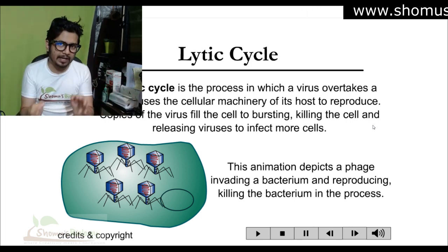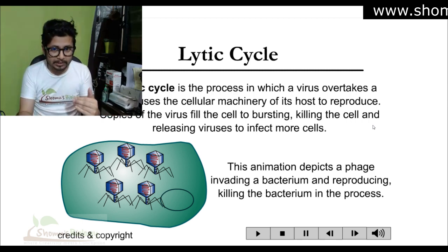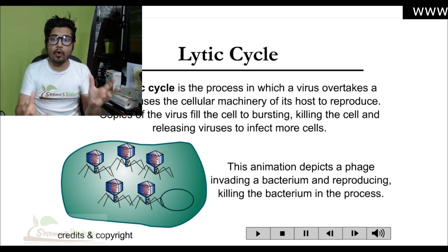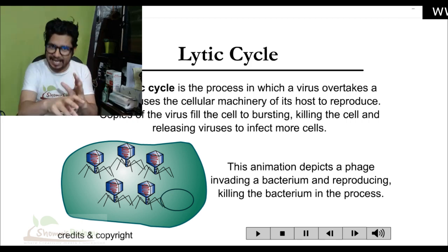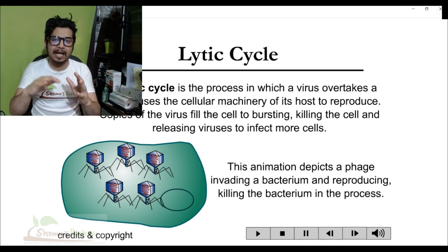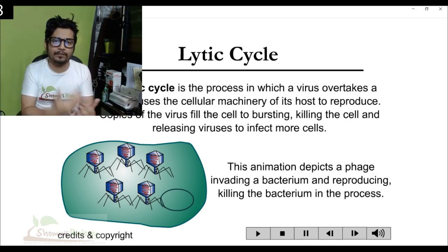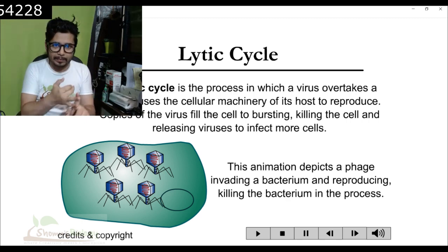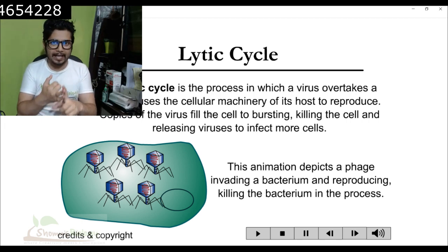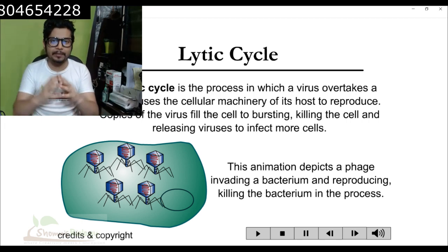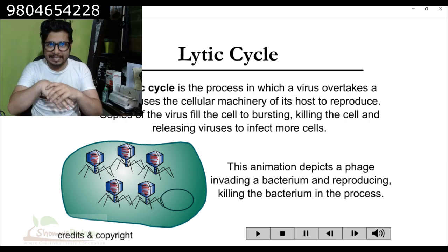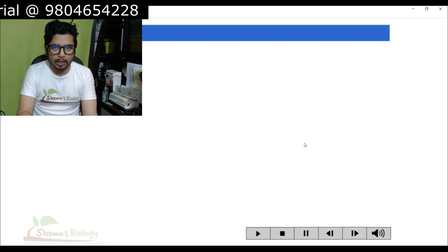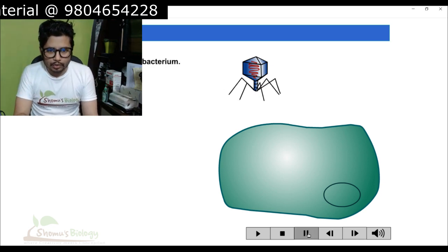Now here is the animated version of the whole process in sequential detail. In the lytic cycle, a virus overtakes a cell, hijacks the cellular machinery, and makes its own components. The bacteriophage makes its genetic component — in this case DNA — as well as the proteins for the capsid. They then assemble the phage particles, kill the host cell, and all the phage particles come out as the cell cracks open.